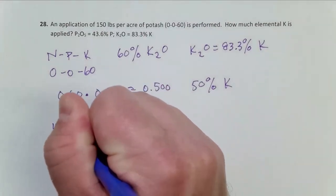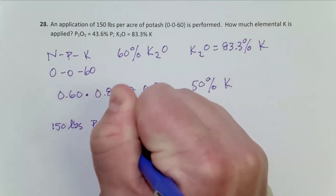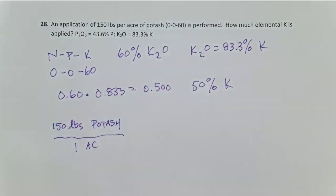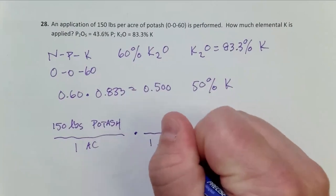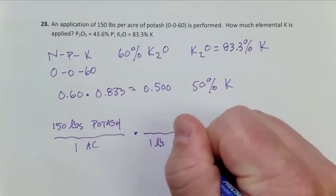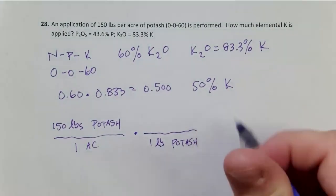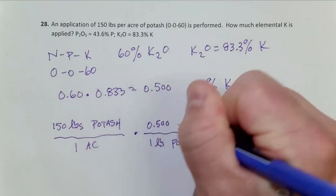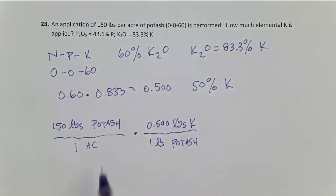We're applying 150 pounds potash for one acre, and we know that for every one pound of potash we have 0.500 pounds K. So that's our elemental rate. Pounds potash cancels here.